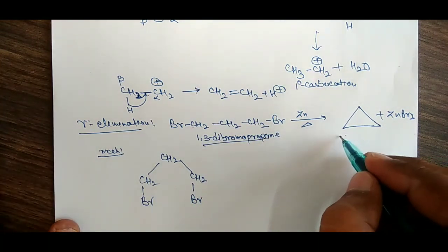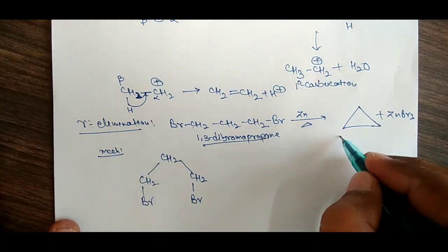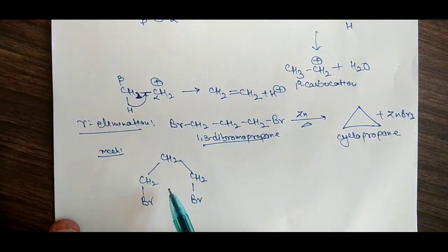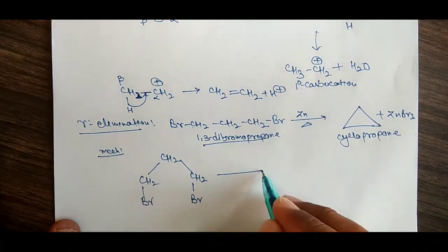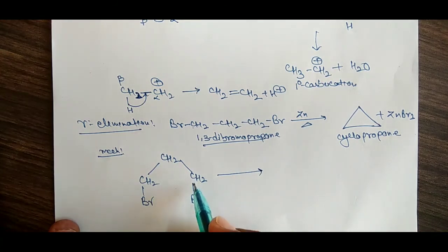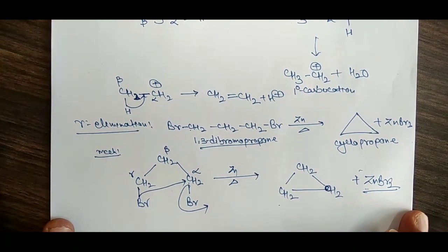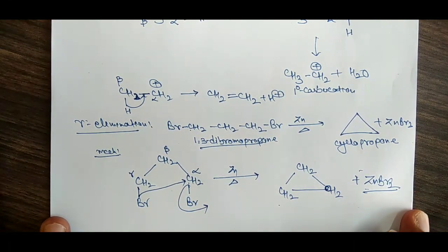Next we have the gamma elimination reaction. What is the gamma elimination reaction? In this, we have Br-CH2-CH2-CH2-Br — 1,3-dibromopropane. When treated with zinc and heat, we get cyclopropane, and the zinc bromide is lost as a side product. This is called the cyclopropane product of gamma elimination.